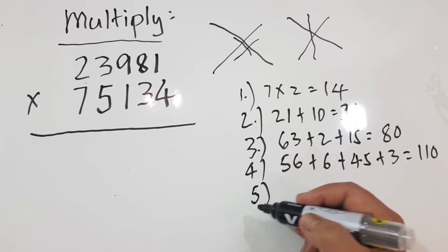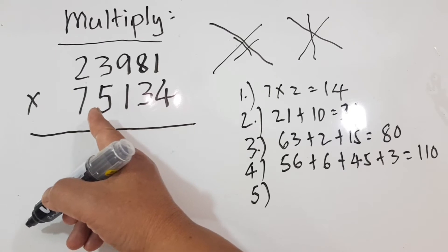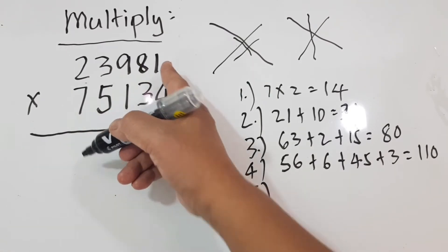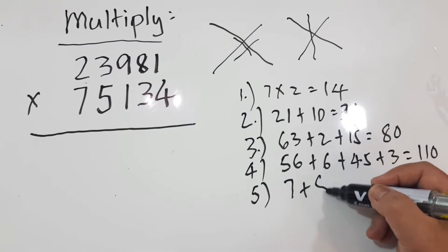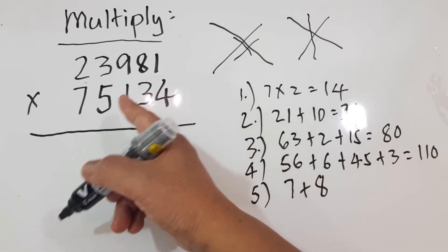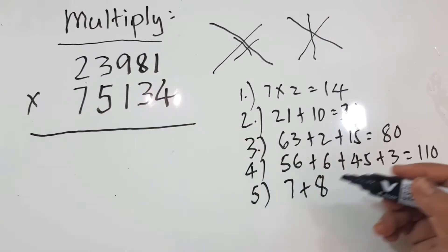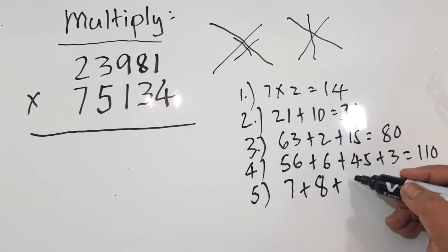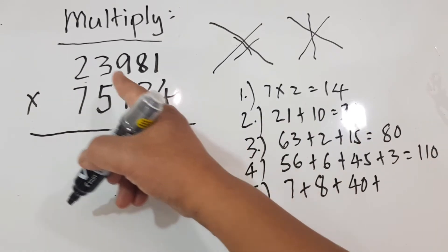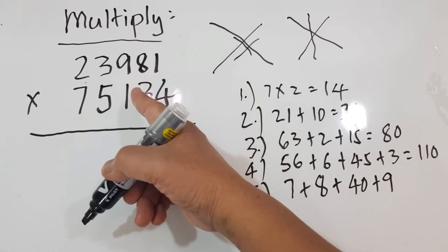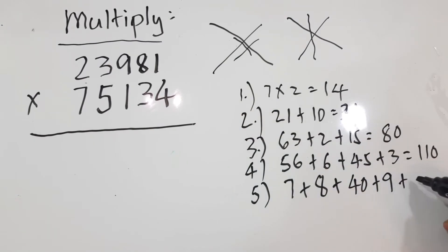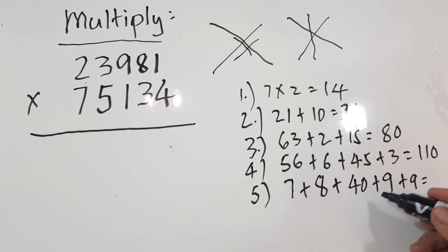Step 5: 7 times 1 is equal to 7, plus 4 times 2 which is equal to 8. Then on the center, 5 times 8 is equal to 40, plus 3 times 3 is equal to 9. Then the center: 9 times 1 is equal to 9. So combining: 7 plus 8 is 15, plus 40 plus 9 is 49, plus 9 equals 73.